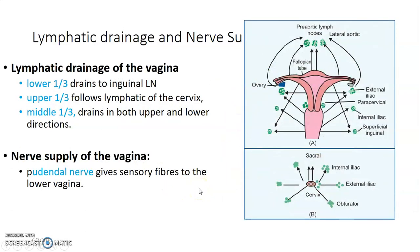The lower third of the vagina drains its lymphatics into inguinal lymph nodes, while the middle third can go upwards or downwards, and the upper third follows the lymphatics of the cervix. The upper goes to the iliac nodes, the lower part to superficial inguinal nodes, and the middle to internal iliac or superficial inguinal.